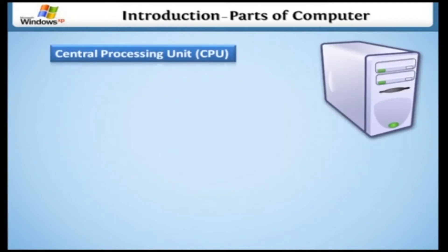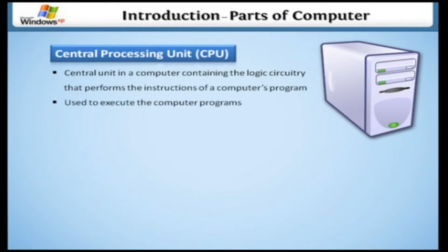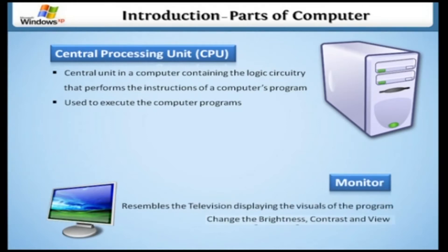Central processing unit, or CPU. This is the central unit in a computer, containing the logic circuitry that performs the instructions of a computer's programs. It is used to execute the computer programs. Monitor. It resembles the television, displaying the visuals of the program. In the monitor, you can change the brightness, contrast, and view.